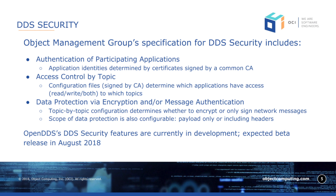The DDS security specification is relatively new, and we'll be focusing on that in this video. The DDS security specification has three main areas: authentication of participating applications, access control by topic, and actually protecting the data in flight — which can be done via encryption and/or message authentication.